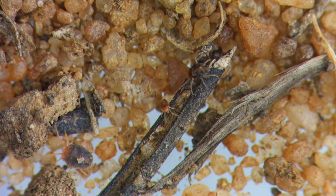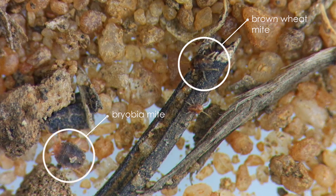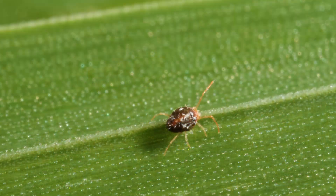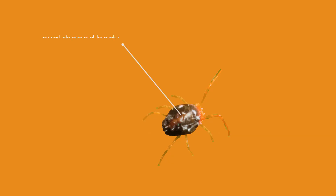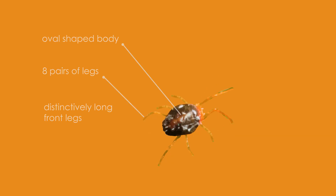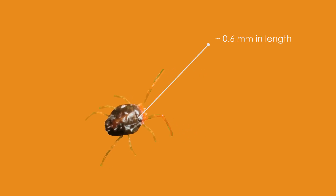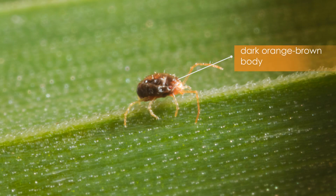The brown wheat mite can easily be confused with brobia mites. Like brobia mites, the brown wheat mite is oval-shaped with eight legs of which the front pair are distinctively long. Unlike brobia mites, the brown wheat mite is smaller in length, going up to 0.6 millimetres, and their legs can look more orange in colour. The brown wheat mite has a dark orange-brown body. Unlike brobia mites which have a flattened appearance, the brown wheat mite is far more globular in shape.